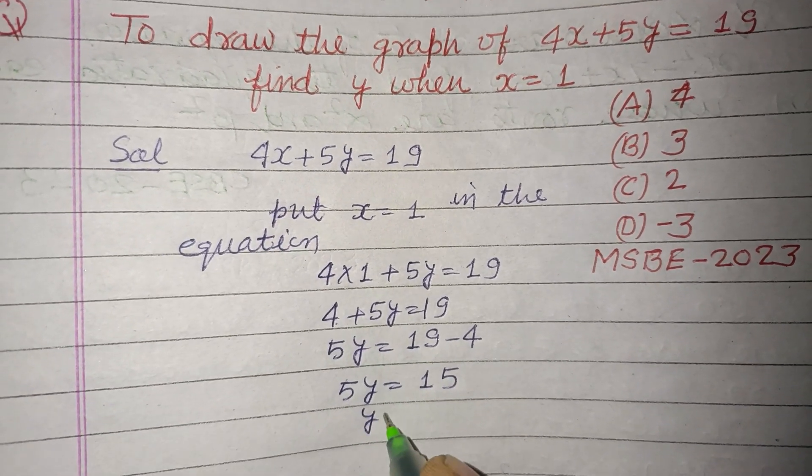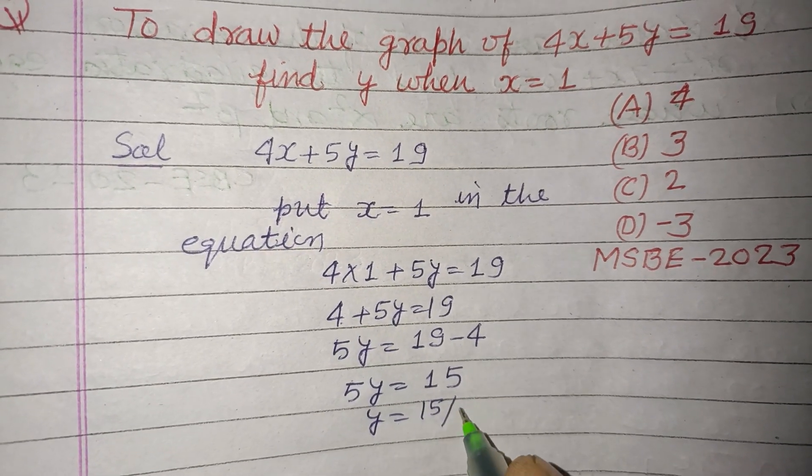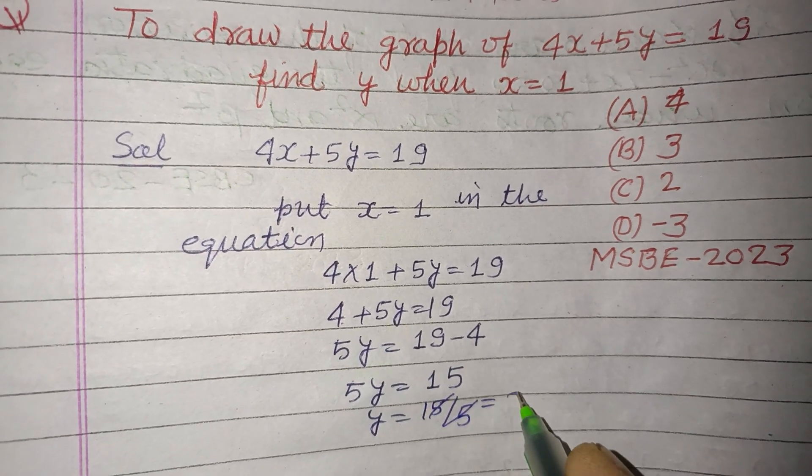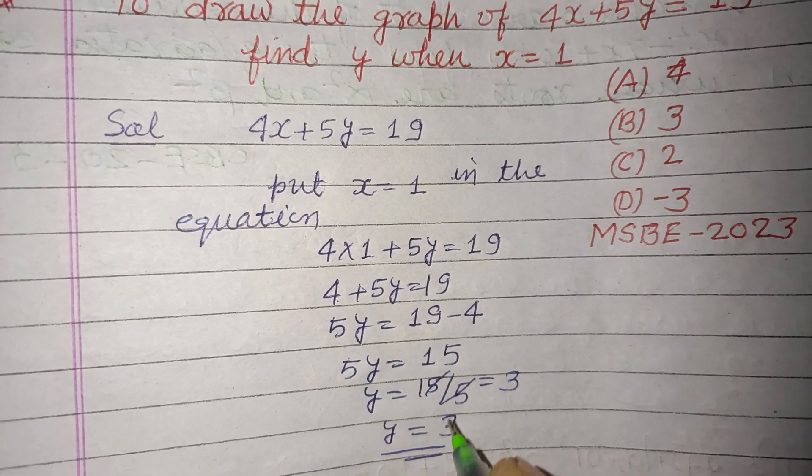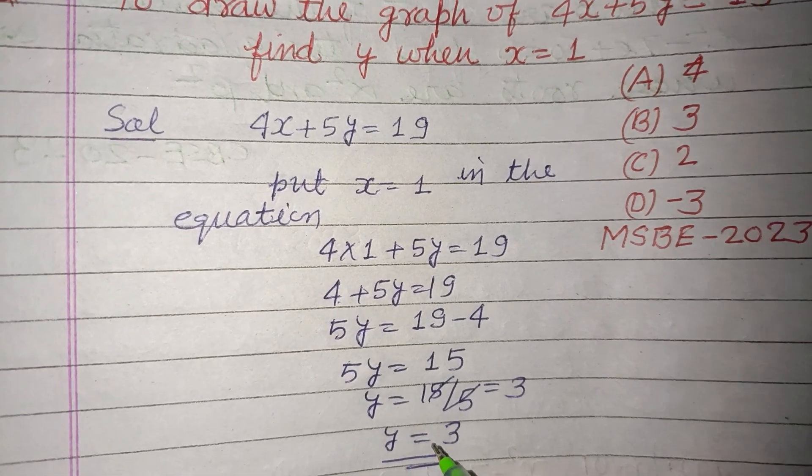This is 15. Now we divide 15 by 5, so 5 times 3 is 15. Therefore y equal to 3. So when x is 1, y equal to 3.